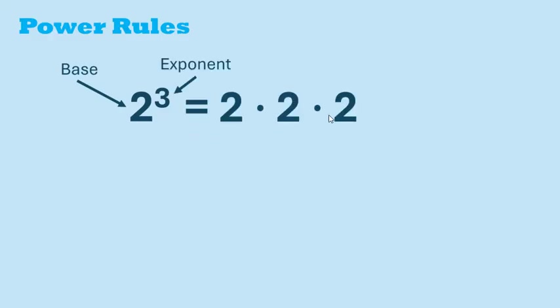Next are power rules. Here we have 2 cubed as an example. The base is 2 and the exponent is 3. This means we're multiplying 2 by itself 3 times, which is 8.